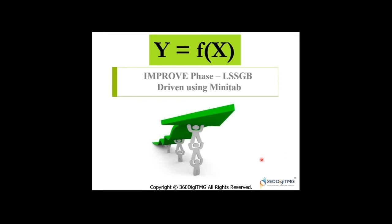Hello and welcome to this session on Lean Six Sigma Greenbelt Improve Phase. This session is driven using Minitab, which is a statistical tool. Before we proceed with the Improve Phase, let us understand the equation y = f(x), which means output is equal to function of inputs.